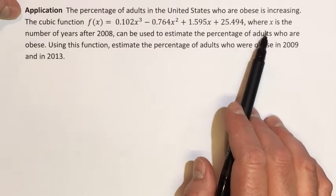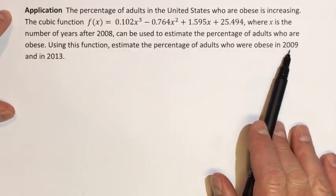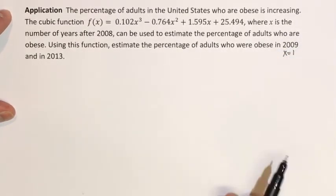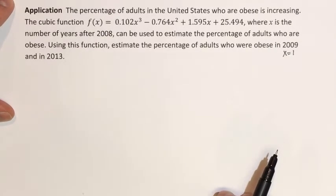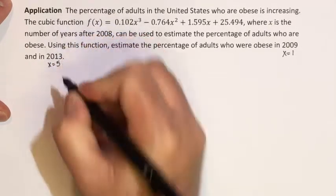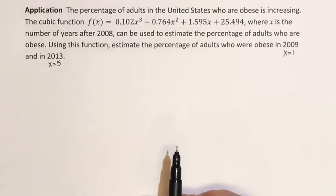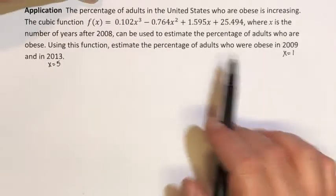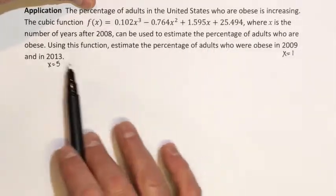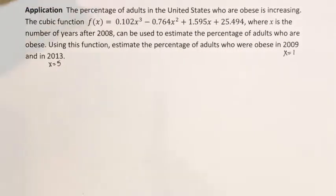In this case, x is the number of years after 2008. So 2009 is one year after 2008, meaning x equals 1 for the year 2009. And 2013 is five years after 2008, so x equals 5 for that scenario. To estimate the percentage for 2009, we substitute 1 into the function; for 2013, we substitute 5 into the function.